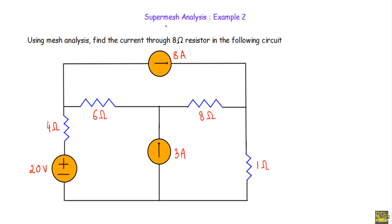In this video I will show you another example of super mesh analysis. Using mesh analysis, find the current through the 8 ohm resistor in the following circuit. In the circuit we have two current sources: one is an 8 ampere current source and another is a 3 ampere current source. When two meshes share a common current source we cannot use mesh analysis — we have to apply super mesh analysis, which is one kind of mesh analysis.